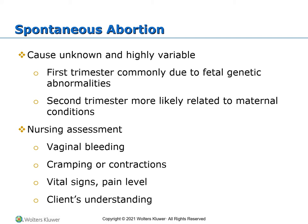A spontaneous abortion is a major cause of bleeding during the first and second trimesters and the most common complication of early pregnancy. It is a pregnancy that ends as a result of natural causes before viability — considered less than 20 weeks gestation. The incidence is 10 to 15% of all clinically recognized pregnancies. Most occur before eight weeks and 50% result from chromosomal abnormalities. A stillbirth is a loss of a fetus after the 20th week of pregnancy and occurs in one out of 100 pregnancies.